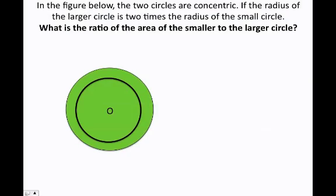Let's say that you have this typical problem. In the figure below, the two circles are concentric — remember, concentric means that they have the same center. If the radius of the larger circle is two times the radius of the smaller circle, what is the ratio of the area of the smaller to the larger circle?